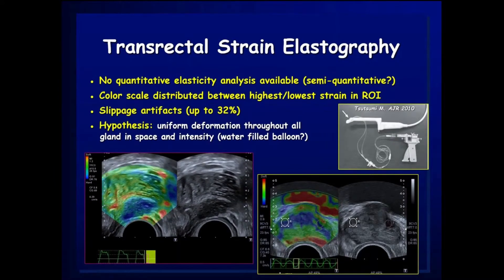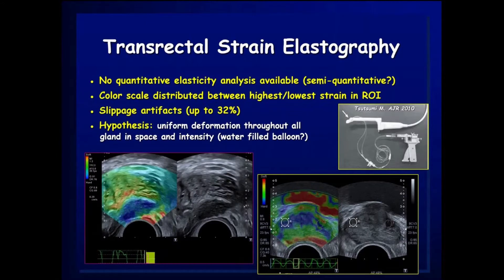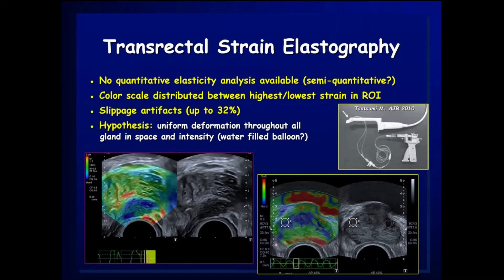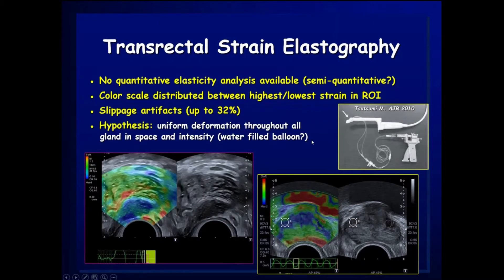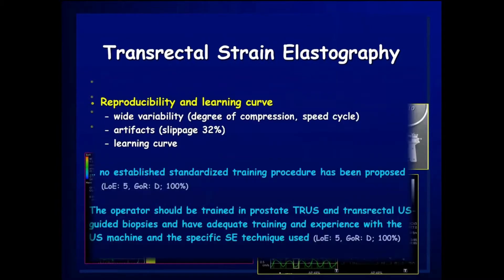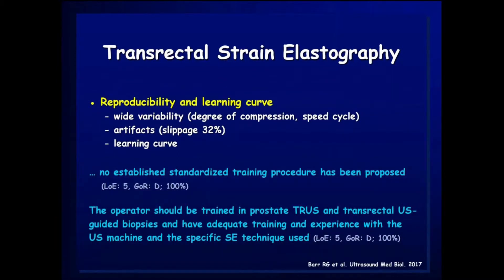One clear limitation of strain elastography is slippage artifact: when you push on the prostate, you deform it and lose the imaging plane. The technique also assumes that deformation is uniform throughout the gland in both space and intensity, which is a very problematic assumption. To achieve the best reproducibility with strain elastography requires a longer learning curve.